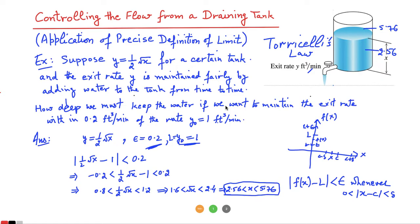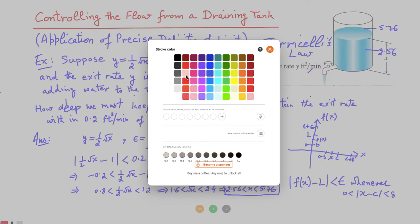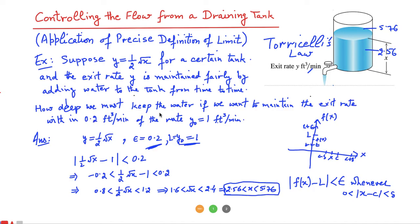This is a fine example using the precise definition of limit. If instead of maintaining the exit rate within 0.2 of 1 you want to maintain it within 0.1 of 1, what height must you maintain? I leave that as a numerical exercise — find how much depth of water you must maintain for controlling the flow when the tolerance is 0.1 instead of 0.2.